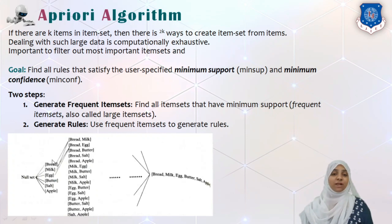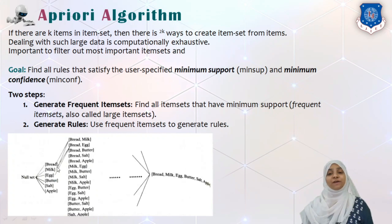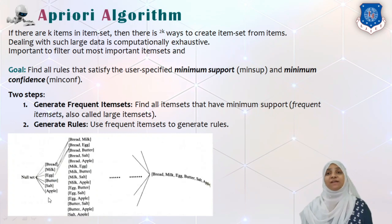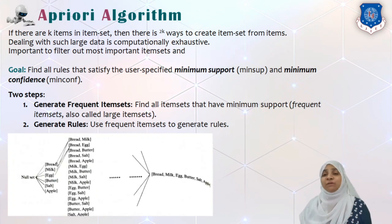For length-2 item sets we can consider pairs like bread with milk, bread with egg, bread with butter, bread with salt, bread with apple, milk with egg, milk with butter, milk with salt, milk with apple, and so on. Similarly for length-3 item sets we can consider bread-milk-egg, bread-milk-butter, bread-milk-salt, bread-milk-apple, bread-egg-butter, bread-egg-salt, and so forth. For K items, the number of possible item sets of different lengths is 2 raised to K.